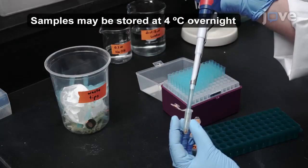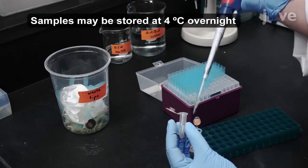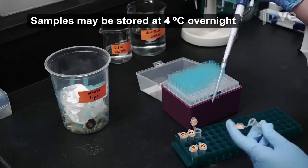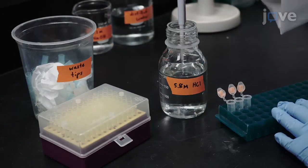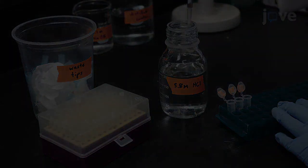Remove the supernatant and transfer it to the tubes containing the supernatant from the first centrifugation. To neutralize the pH of the supernatant, add 11 microliters.